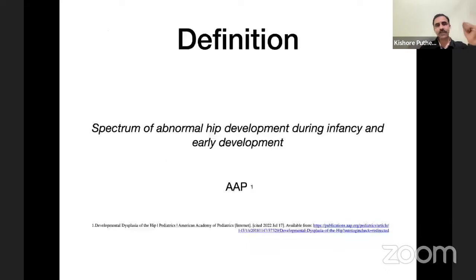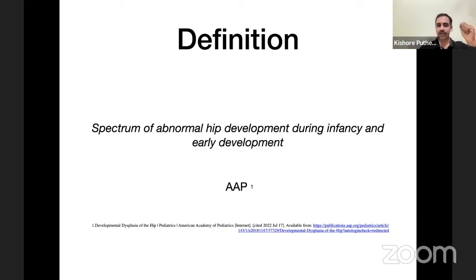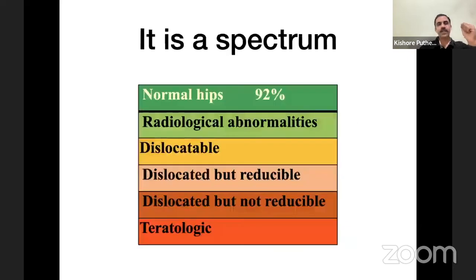We will also enumerate the various treatment options for specific age groups and describe relevant pathophysiology especially after a certain age. So what is the definition? DDH is a spectrum of abnormal hip development during infancy and early development — this is the definition given by the American Association of Pediatricians.